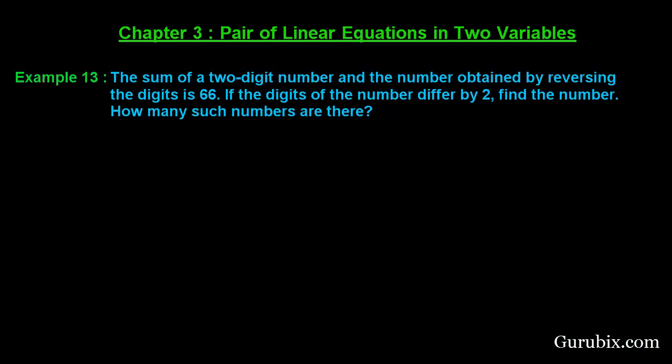Welcome friends. Let us solve example number 13 of chapter 3. The example is as follows: the sum of a two-digit number and the number obtained by reversing the digits is 66. If the digits of the number differ by 2, then find the number and how many such numbers are there. This is an application of pair of linear equations in two variables.